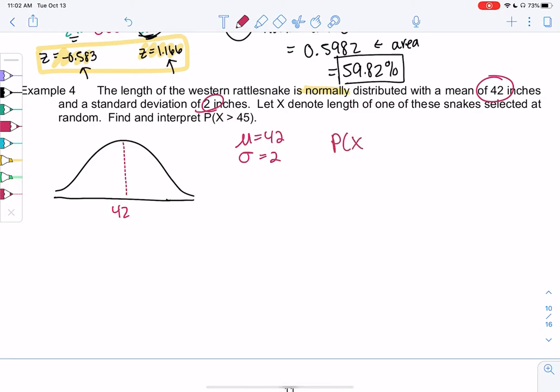So P of x greater than 45 means we want area or probability. 45, greater than means to the right. So before we can use normal CDF, we need z-score. Looks like there's only one z-score in this example because we're going to infinity.